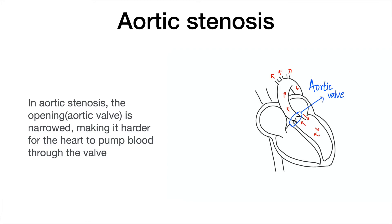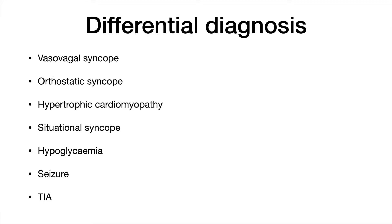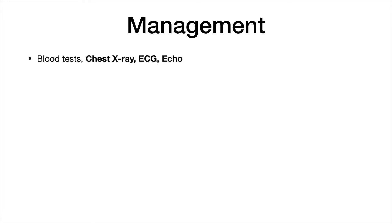In your case, this aortic valve is narrowed, making it harder for the heart to pump blood — this is why your brain is receiving less blood and you are having fainting episodes. In the differential diagnosis, make sure you mention all the different causes of syncope, including hyperglycemia, seizure, and TIA. If management is a task, mention investigations like blood tests, chest X-ray, ECG, and echo. ECG is done for any arrhythmias or thickening of the left ventricle, and echo is done for assessing the functioning of the aortic valve and left ventricle.